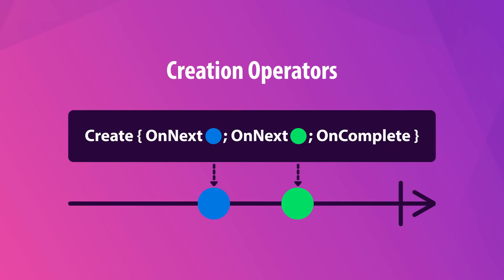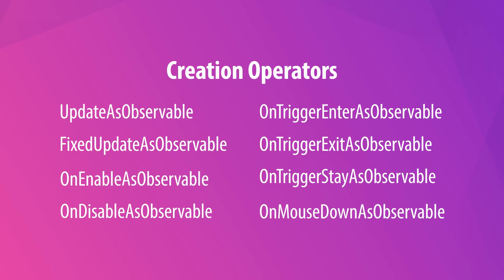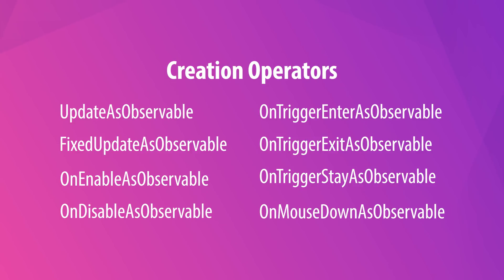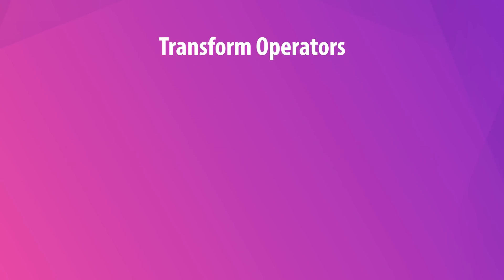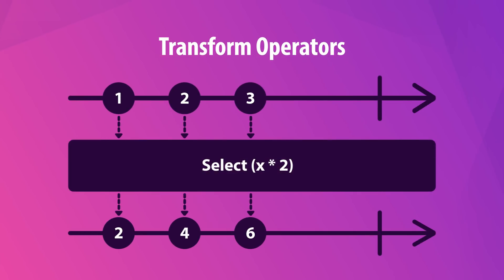UniRx actually comes with its own special creation operators that create new observables for MonoBehavior events. Transform operators transform the values emitted by an observable. We've seen this before with the select operator, which allows us to manipulate emitted values via the return value of our own custom lambda or method.